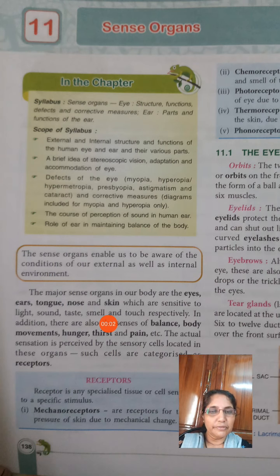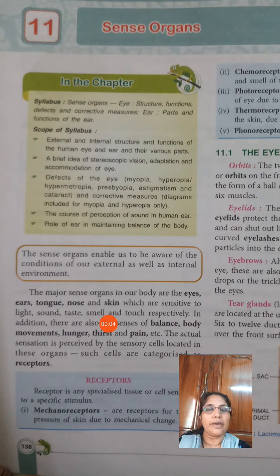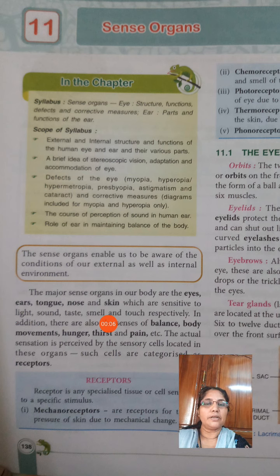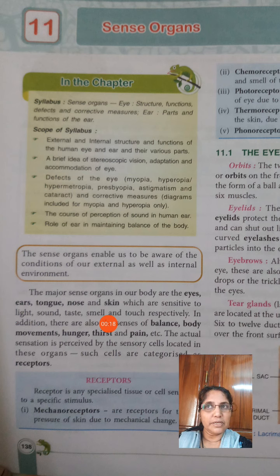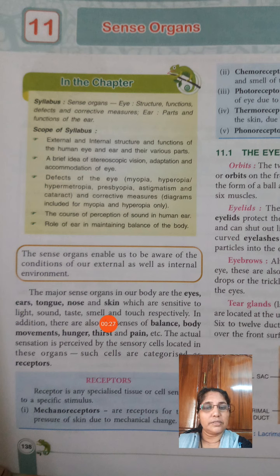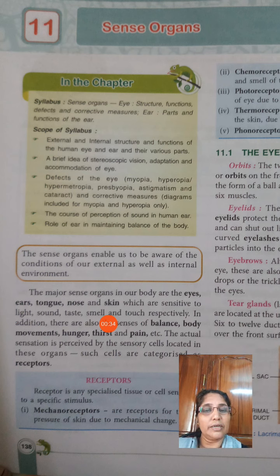Good evening students. Today I am starting the new chapter: sense organs. We learned the nervous system in our last chapter, where we learned that our nervous system enables us to keep informed about our surroundings. The nervous system perceives all the information through the sense organs.